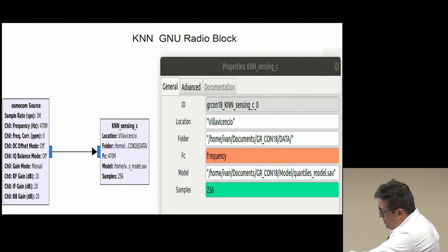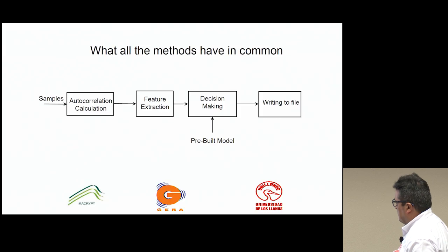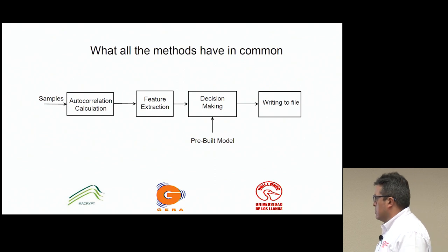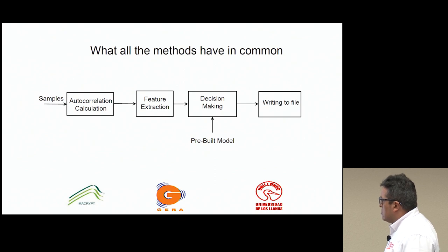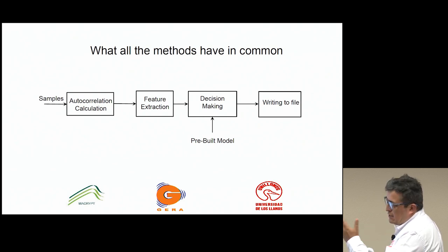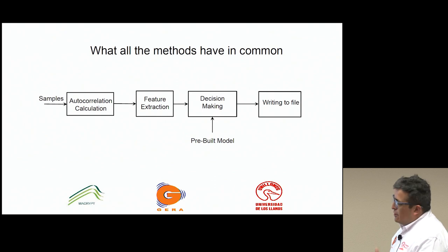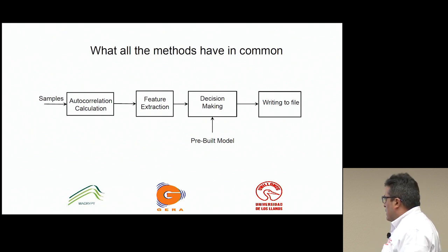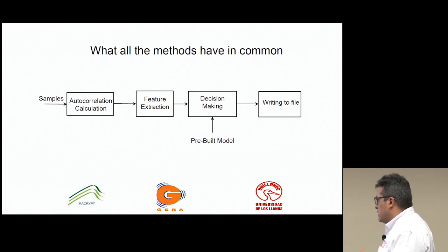All three methods I have presented have these steps in common: they take the samples, calculate the autocorrelation, extract some features, make a decision based on a pre-built model, and then write to a file. In the case of the Euclidean distance method, it is very simple — you just compare with a threshold. In the K-means and KNN methods, the model is somewhat more complex. The key difference is that the Euclidean distance method involves no learning, while the other two methods involve some learning.